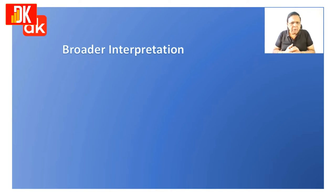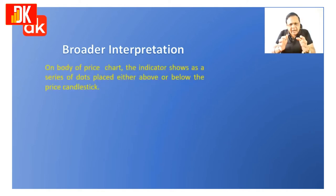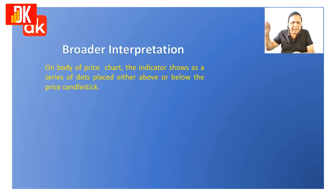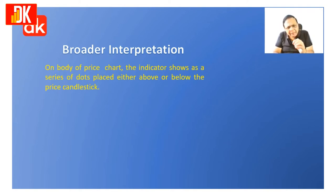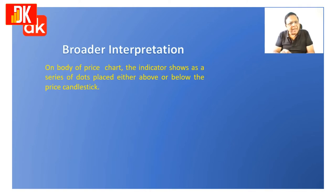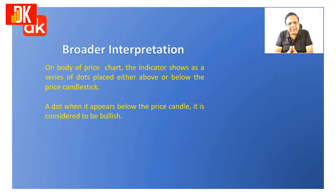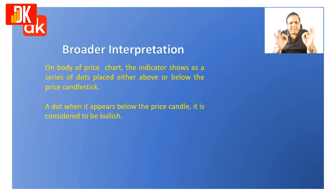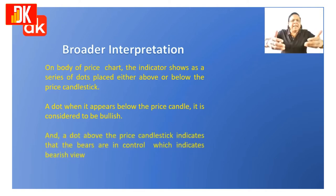Let me share the broader interpretation of Parabolic SAR on the price chart. It is constructed on the body of the price chart itself. The indicator shows a series of dots which can either be above or below the candlestick. When you are using the Parabolic SAR, if the dots are appearing below the candlestick, it indicates a bullish view. If the dot is appearing above the candlestick, it indicates a bearish view. It is that simple.